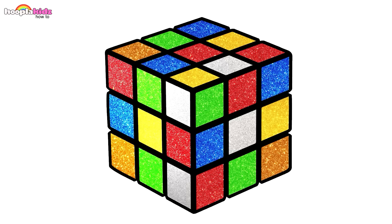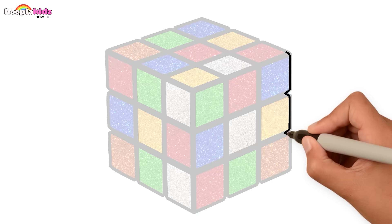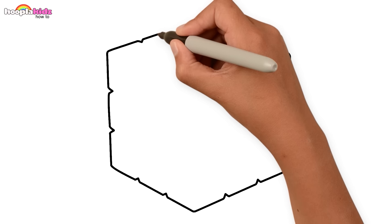Hi kids! Look at this wonderful Rubik's Cube. Let's start drawing. Start with the outline and then make a hexagon-like shape.